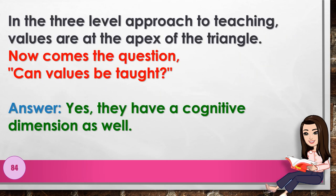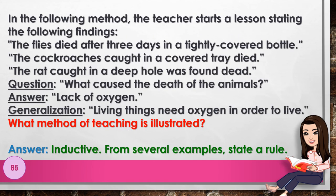Number 84: In the three-level approach to teaching, values are at the apex of the triangle. Can values be taught? Answer: yes, they have a cognitive dimension as well. Number 85: In the following method, the teacher starts a lesson stating findings — flies died after three days in a tightly covered bottle, a cockroach in a covered tray died, a rat caught in a deep hole was found dead. Question: what caused the death of the animals? Answer: lack of oxygen. Generalization: living things need oxygen to live. What method is illustrated? Answer: inductive — from several examples, state a rule.